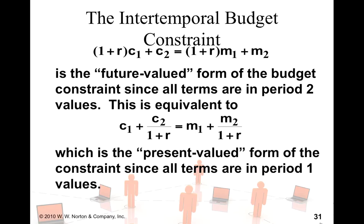One was what we call the future value budget constraint, where there are no interest rate terms associated with the second period values, but we are working with the second period values of m1 as well as c1.